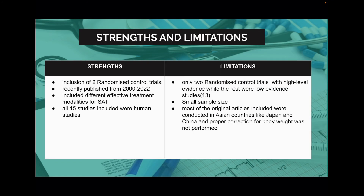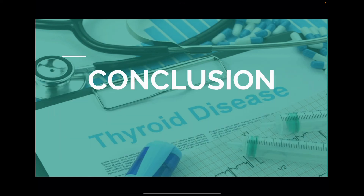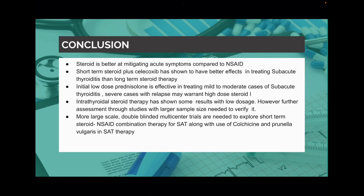Strengths and limitations of our systematic review. The strengths were inclusion of at least two randomized controlled trials, recently published articles, and all 15 studies were human studies. The limitations were that only two randomized controlled trials were included and the others were low-quality studies. The sample size was small, and proper correction for body weight was not done.